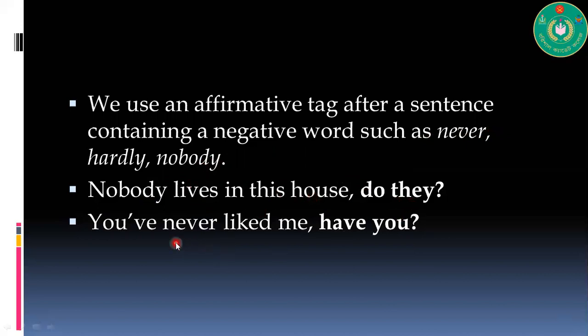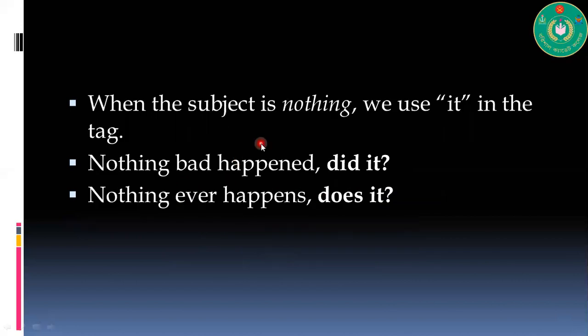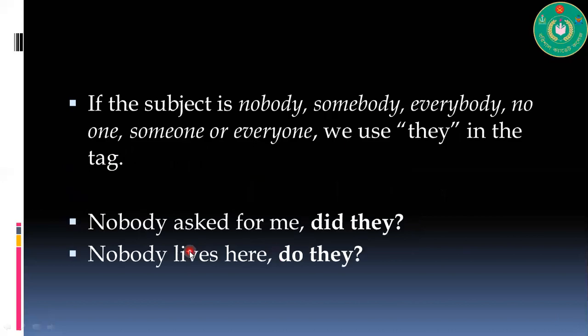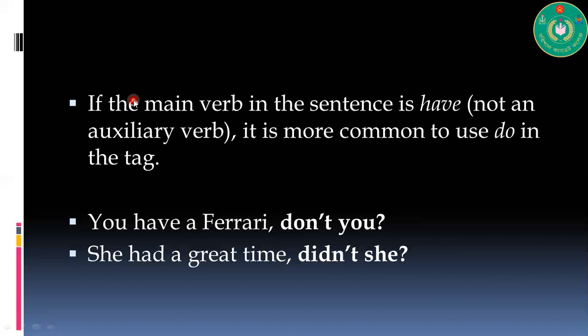Affirmative tag after a sentence containing a negative word such as never, hardly, nobody. Nobody lives in the house, do they? You never like me, have you? When the subject is 'nothing', we use 'it' in the tag. Nothing bad happens, did it? Nothing ever happens, does it? If the subject is nobody, somebody, everybody, no one, someone, everyone, you can use 'they' in the tag. Nobody asked for me, did they?